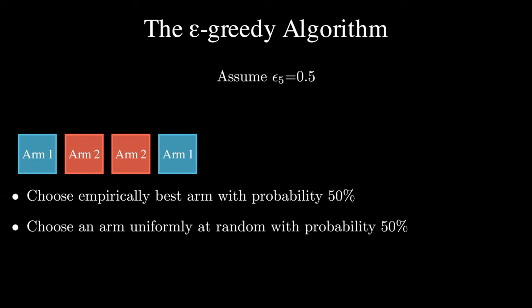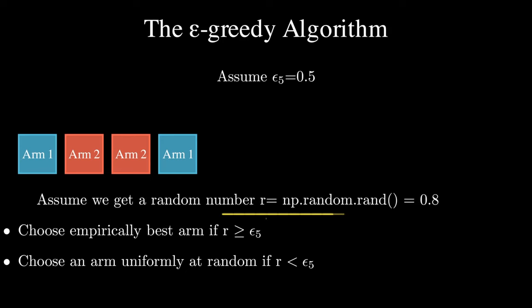At round 5, assume epsilon 5 is 0.5, which means half of the chance we should choose the best arm, half of the chance we should select an arm at random. Again, we use the random number generator to get a random number 0.8, which is greater than 0.5.